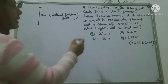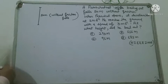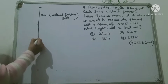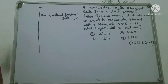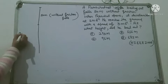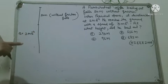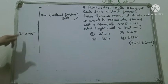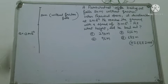उसके बाद second क्या कह रहा है कि when parachute opens, जब उसने parachute यहाँ पर open किया, तो it decelerates. यहाँ पर जब parachute open किया तो decelerate, यहाँ उसकी जो velocity थी वो कम होना start हो गई — किस rate से? 2 meter per second square की rate से. अब deceleration हो रहा है, तो यहाँ पर negative sign के साथ लिखा जाएगा, क्योंकि velocity decrease कर रही है — तो यह minus 2 meter per second square.